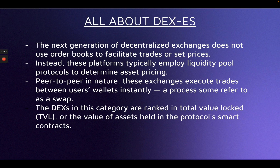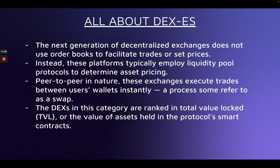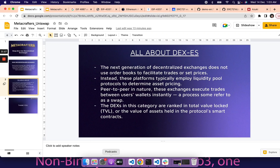Because DEXs do not use intermediaries, they are peer-to-peer in nature and execute trades between user wallets instantly. For example, when you want to convert USDC to ETH, you can use a decentralized exchange and swap almost instantly. DEXs in this category are ranked by total value locked, or TVL — a terminology you will hear a lot in DeFi — which refers to the value of assets held in the protocol's smart contracts. Let's take a look at one of the most popular DEXs, Uniswap, and see how it works.